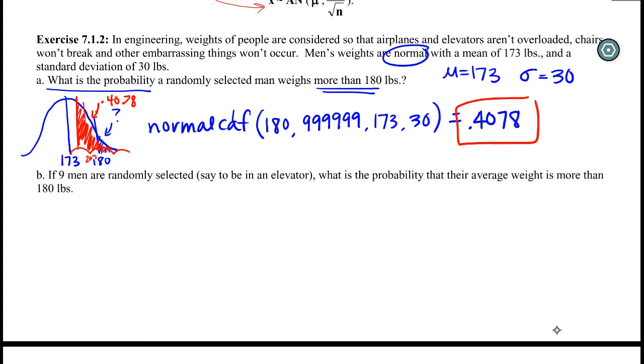So the next question says, if 9 men are randomly selected, say to be in an elevator, what is the probability that their average weight is more than 180? So the most common mistake here is to just do what we did in part A. But obviously this is a different question.